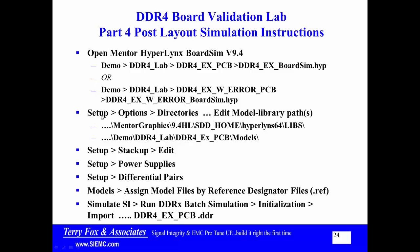Once you're in HyperLynx, go to Setup — that's about the second one over at the very top of the tool. Go to Setup, Options at the bottom, then Directories, and you have to edit the model library paths. There are two critical things that must be in the library path: one is the Mentor Graphics HyperLynx 64 LIBs (or 32 LIBs for a 32-bit system), and the second is the models corresponding to the parts in the DDR4 Example PCB.